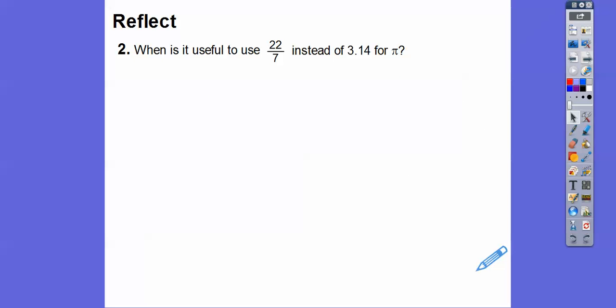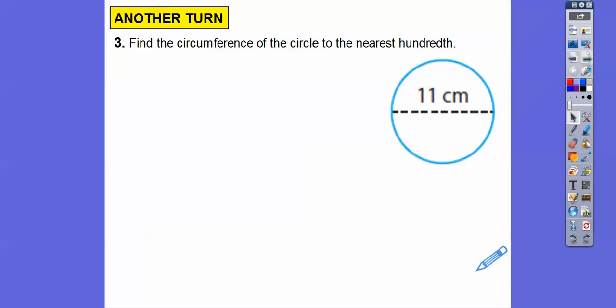And this question says, when is it useful to use 22 sevenths instead of 3.14 for pi? Well, it's useful if we have a diameter that's a multiple of 7. Because here we have a diameter that was a multiple of 7. And 22 sevenths, the 7 goes into 14 twice. And it gets rid of that. We don't have any decimals. If we used 3.14, it'd be 2 times 3.14, yeah, times 14. And we get a decimal answer. So that's one that's useful to use that when the radius is a multiple of 7.